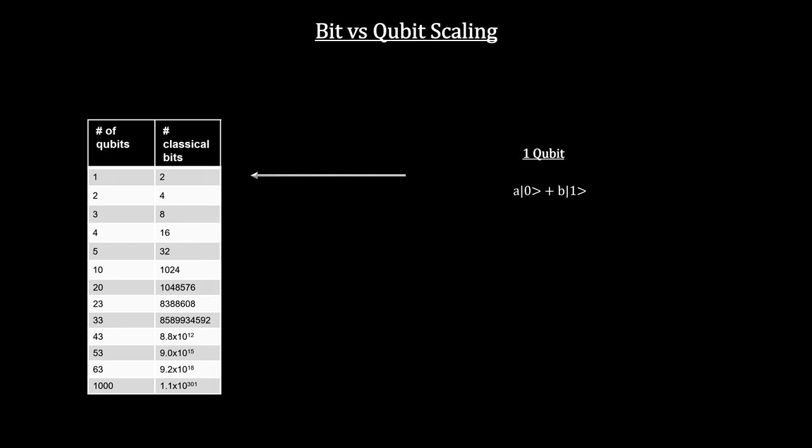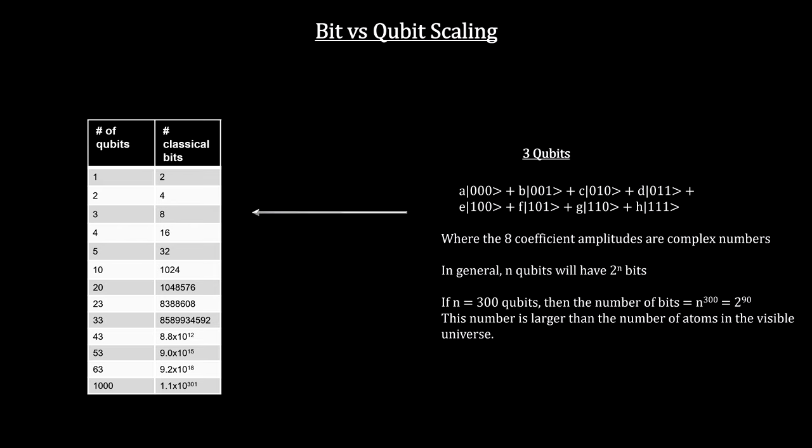Here's a table that compares classical computer bits to qubits. Three qubits are equivalent to eight bits, a full byte. This scaling grows into significant numbers as the number of qubits are increased.